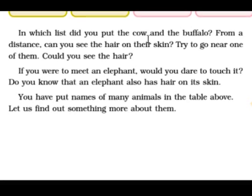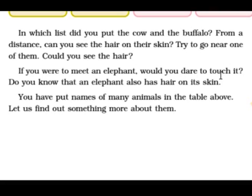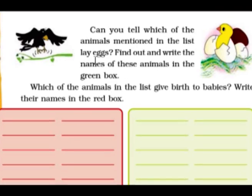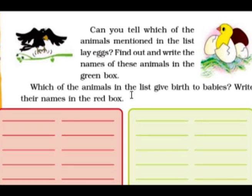In which list did you put the cow and the buffalo? From a distance, can you see hair on their skin? Try to go near one of them — could you see the hair? If you were to meet an elephant, would you dare to touch it? Do you know that elephant also has hair on its skin? Can you tell which animals in the list lay eggs? Find out and write their names in the green box. Which animals give birth to babies? Write their names in the red box.